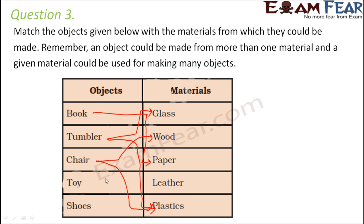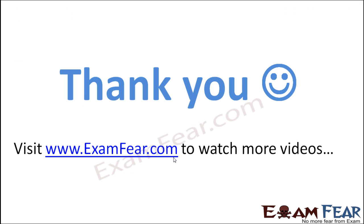Think of a toy — a toy can be made up of wood, or it can be made up of plastic, or even paper, for example paper planes and paper boats. Think of shoes — shoes can be made up of leather, but glass shoes, wooden shoes, paper shoes — not really. So leather makes shoes. This shows that by looking at the properties of materials, you can decide which material can make which object.